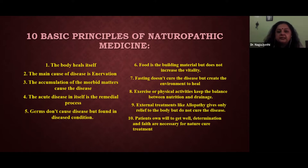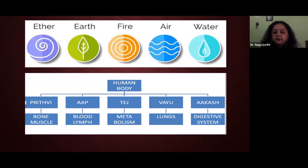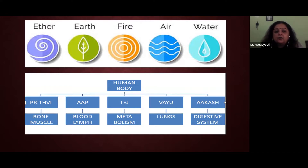These are the 10 basic principles of naturopathic medicine. Next we have the five elements — one of the most important concepts used in naturopathic medicine. They are ether, earth, fire, air, and water — or prithvi, aap, tej, vayu, and akash. When we say about these five elements, how are they represented in the human body?